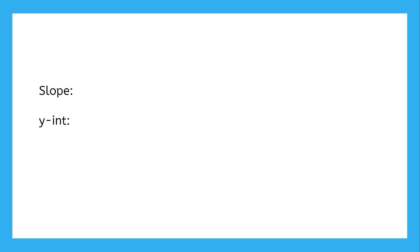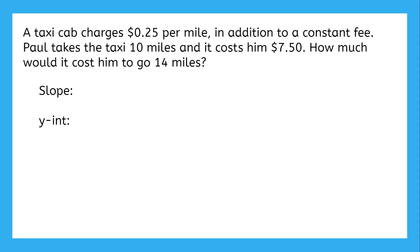We've previously seen how to solve word problems using slope-intercept form. It requires identifying the slope and the y-intercept within the problem. But what if the problem doesn't give you the y-intercept, like this one? It gives us the taxi's rate per mile, or the slope, and it gives us one specific scenario — a cost of $7.50 for 10 miles — but it doesn't say anything about the y-intercept, or in this case, the cost for zero miles. So it might be more trouble than it's worth trying to use slope-intercept form, because we'd have to do a bunch of math to calculate the y-intercept first.